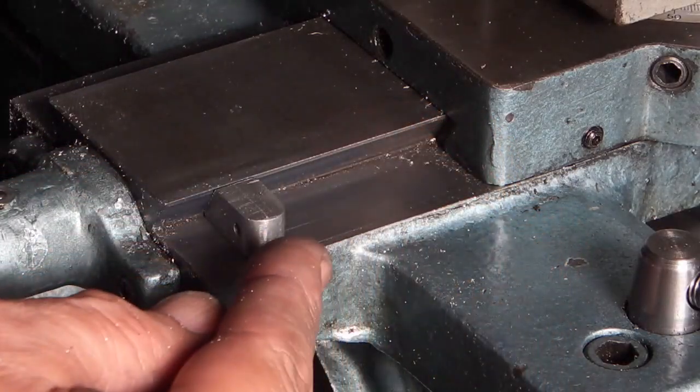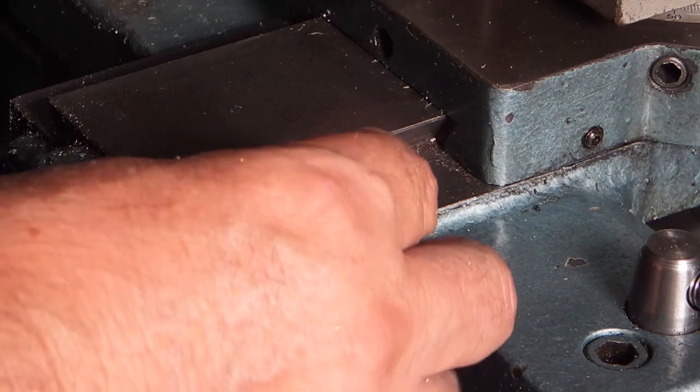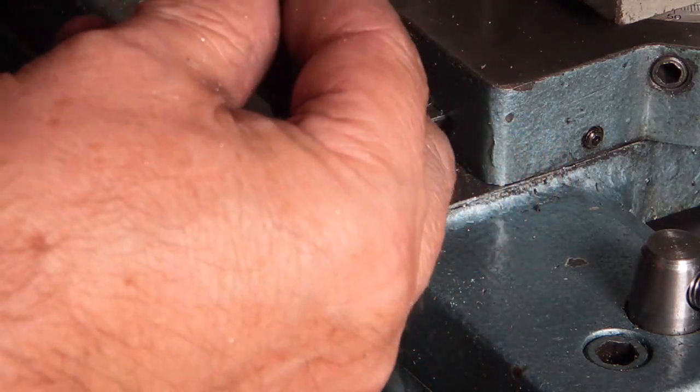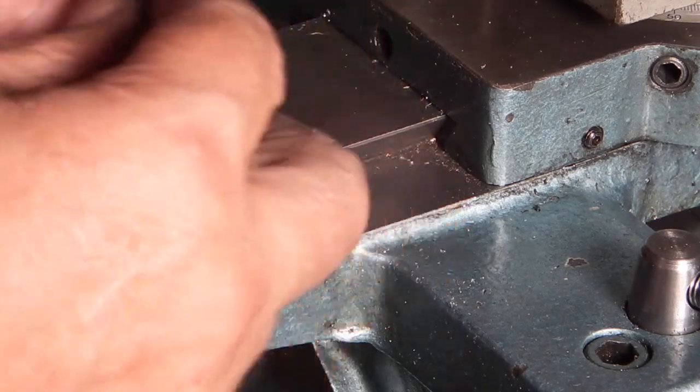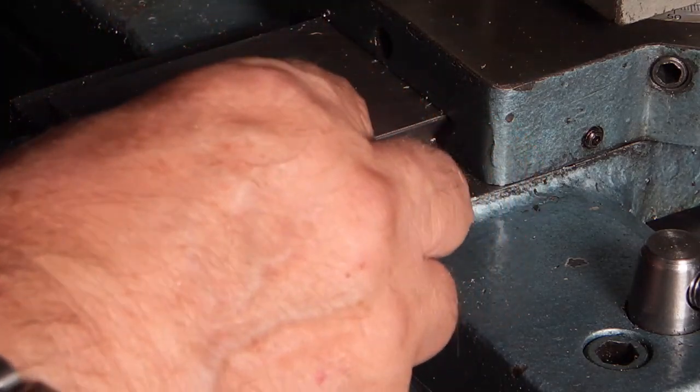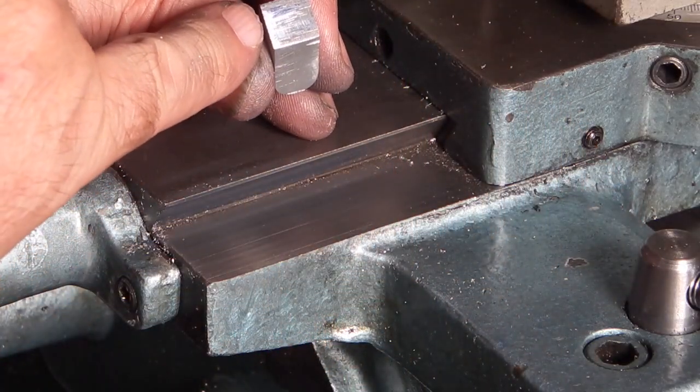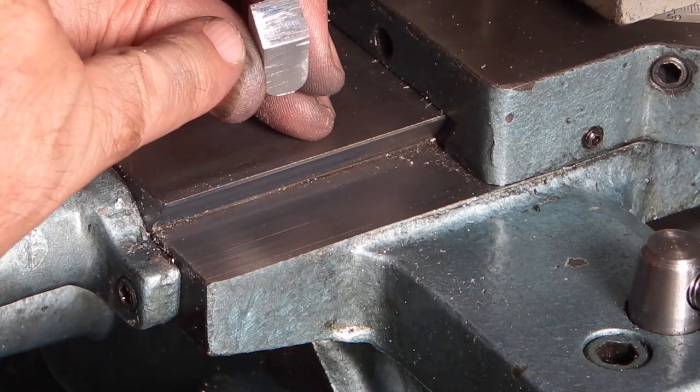To check the angle, you fit the part to the cross slide, rub it up and down. Put some micrometer blue on the cross slide and you should have a mark most of the way across the face. You can see it's touching at the top and the bottom. That shows you've got the correct angle.